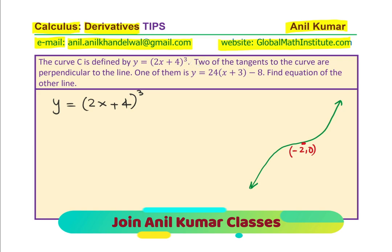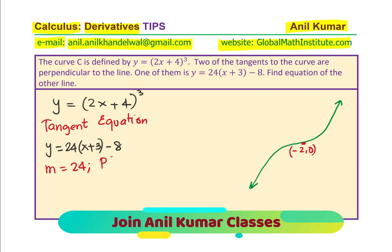We are told that two of the tangents to the curve are perpendicular to the line. The equation of the line itself is not given to us — only the equation of one tangent is given. That tangent is y equals to 24(x + 3) minus 8, so 24 is the gradient. From the equation, the point is clearly (minus 3, minus 8).